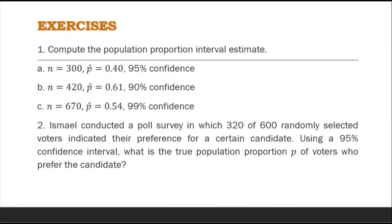For our exercises: Number 1, compute the population proportion interval estimate given the following values. Number 2: Ismael conducted a poll survey in which 320 of 600 randomly selected voters indicated their preference for a certain candidate. Using a 95% confidence interval, what is the true population proportion p of voters who prefer the candidate?